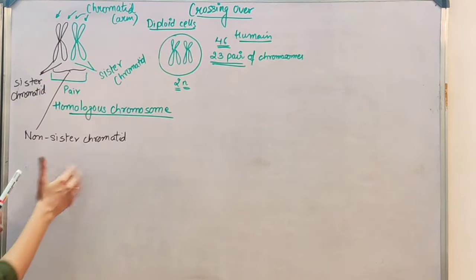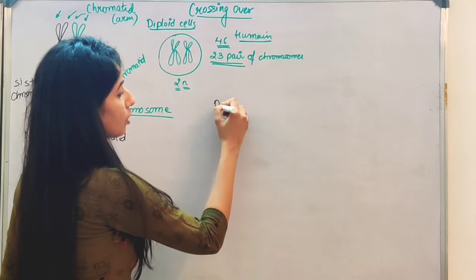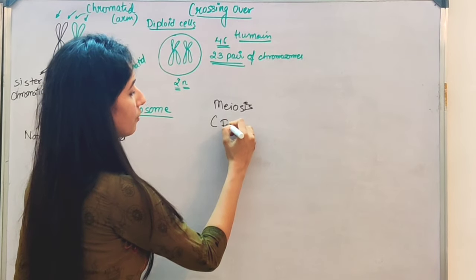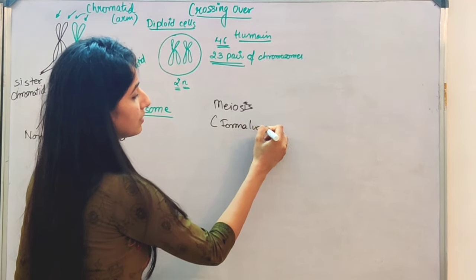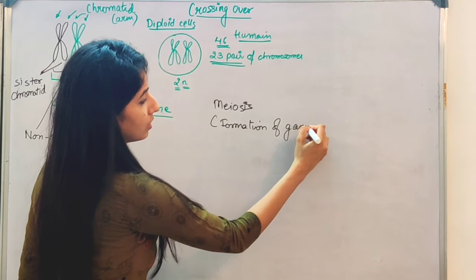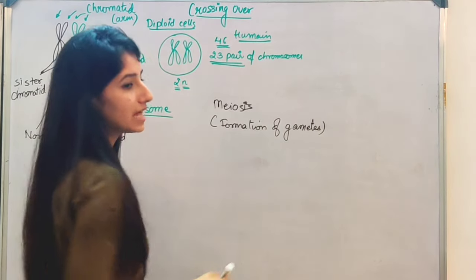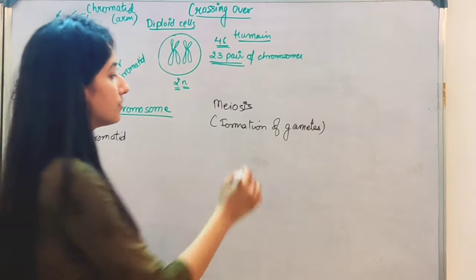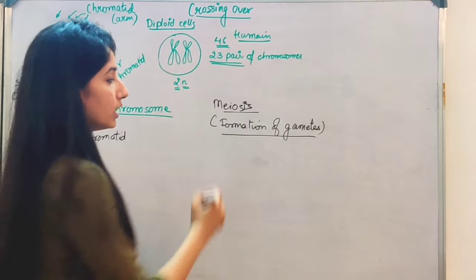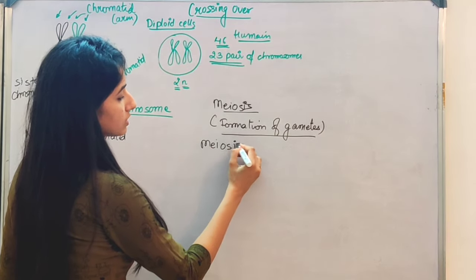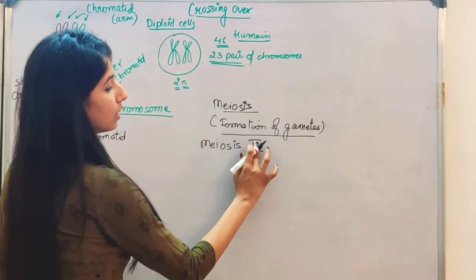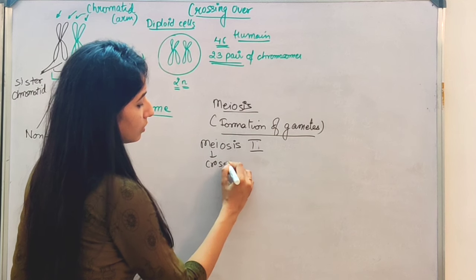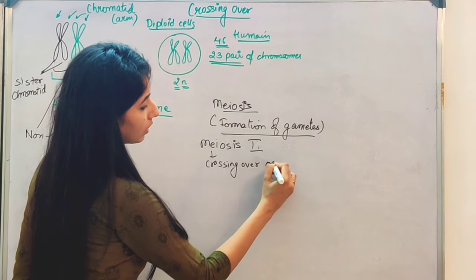I hope you understand this. A pair is known as a homologous chromosome. Each arm is known as a chromatid. On one chromosome, there are 2 arms that are sister chromatids. And the arms of the two homologous chromosomes are known as non-sister chromatids. Now, if we talk about meiosis — meiosis is the division that results in the formation of gametes. Gametes are the cells that are inherited from the parents to the offspring. During meiosis 1, crossing over occurs.